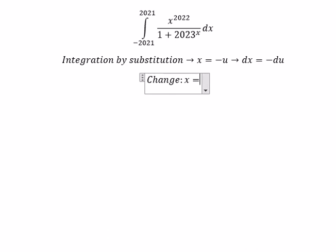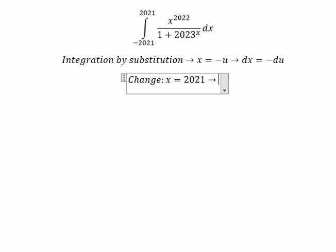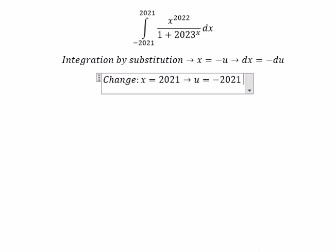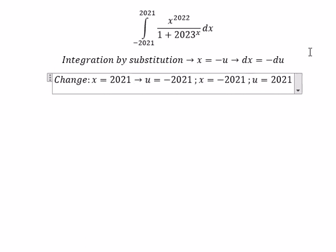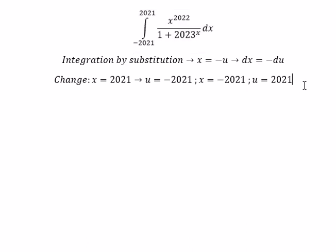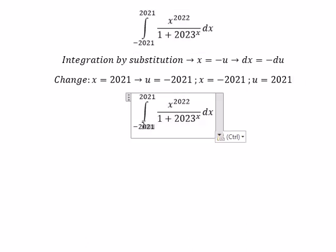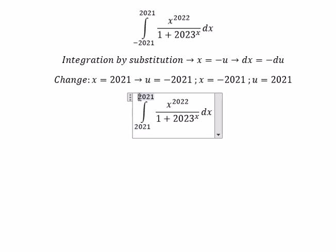If s equals 2021, then u should be negative 2021. If s equals negative 2021, then u should be 2021. So this one we change to positive, and this one we change to negative.